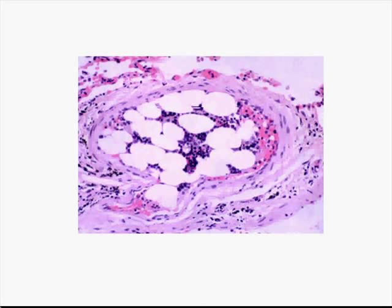This image looks like marrow — there's a lot of fat in it, and as you know, marrow is normally 50 percent fat. But the reason I'm showing you this is because it's inside a blood vessel — so that's a fatty embolism, probably caused by a fracture of a bone with hematopoietic marrow and fat present. Technically, the shafts of long bones contain only fat.